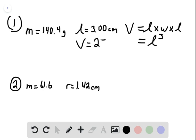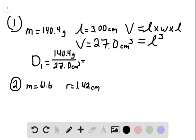So the volume of this cube is 3 centimeters cubed, which is 27.0 centimeters cubed. So then the density of this, I'll call it D1, is going to be 140.4 grams over 27.0 centimeters cubed, and to 3 sig figs, the density is 5.20.